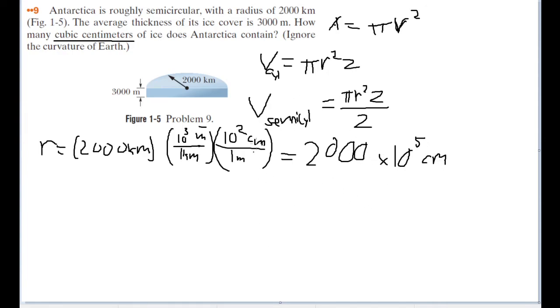Now, let's get our thickness, our z. So, then z is going to be equal to our 3,000 meters. And let's just convert right into centimeters. That's 10 squared centimeters over 1 meter, our little conversion factor there. Which gets us 3,000 times 10 to the 2 centimeters.